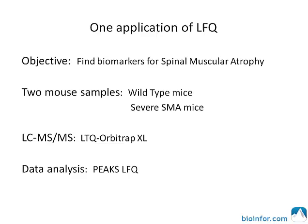Here is another case from a real proteomics project. The purpose of this project is to find molecular biomarkers to assist with monitoring spinal muscular atrophy disease progression and establishing the effectiveness of therapies being tested. Label-free quantification is used to identify individual proteins in pathologically affected skeletal muscle from spinal muscular atrophy mice that report directly on the disease status.